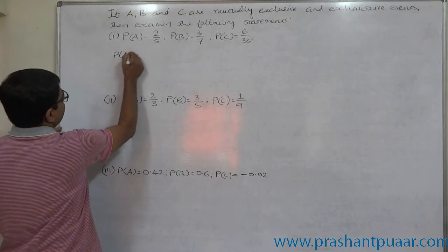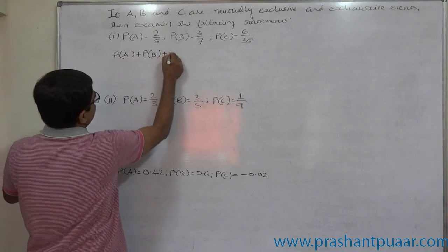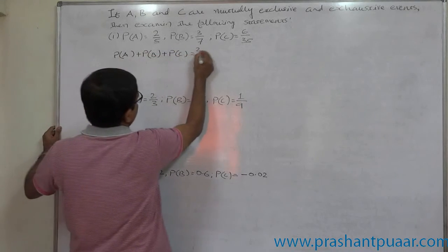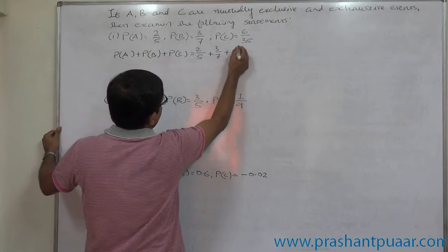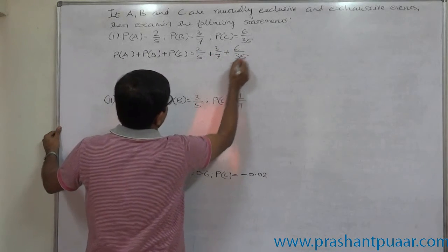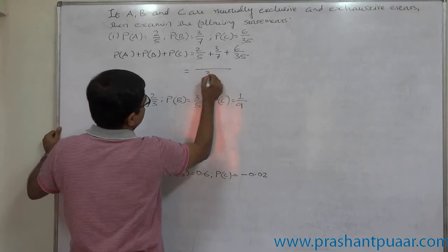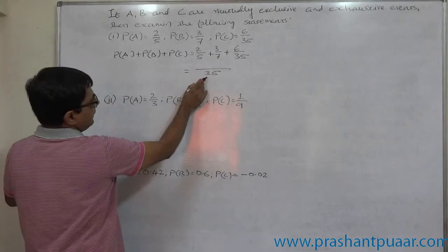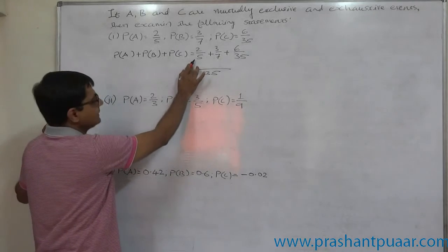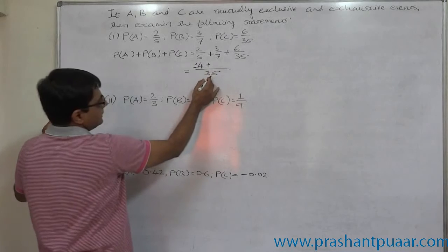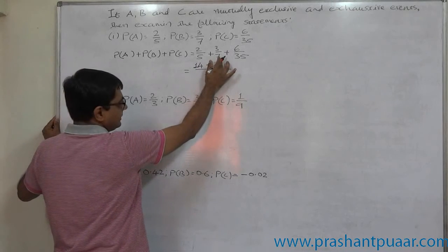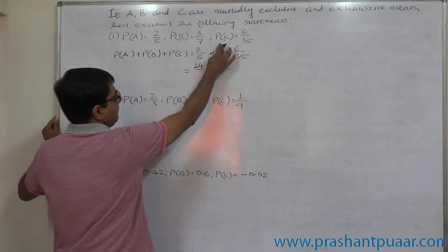P of A plus P of B plus P of C equals two by five plus three by seven plus six by 35. Let us take 35 as LCM. 35 divided by five is seven, seven into two is 14. Plus, 35 divided by seven, that is five, five into three is 15.